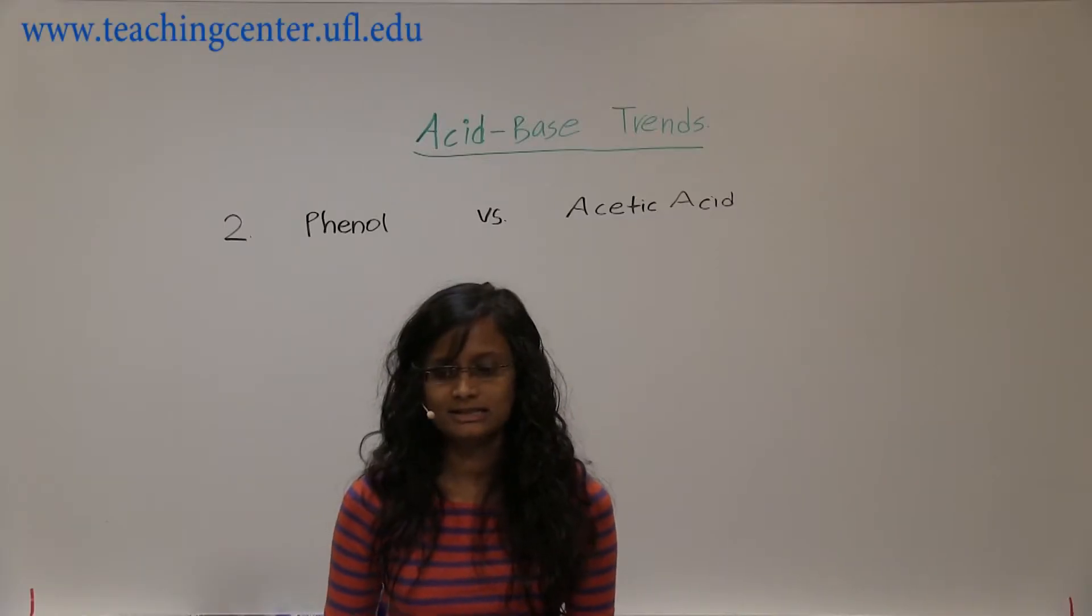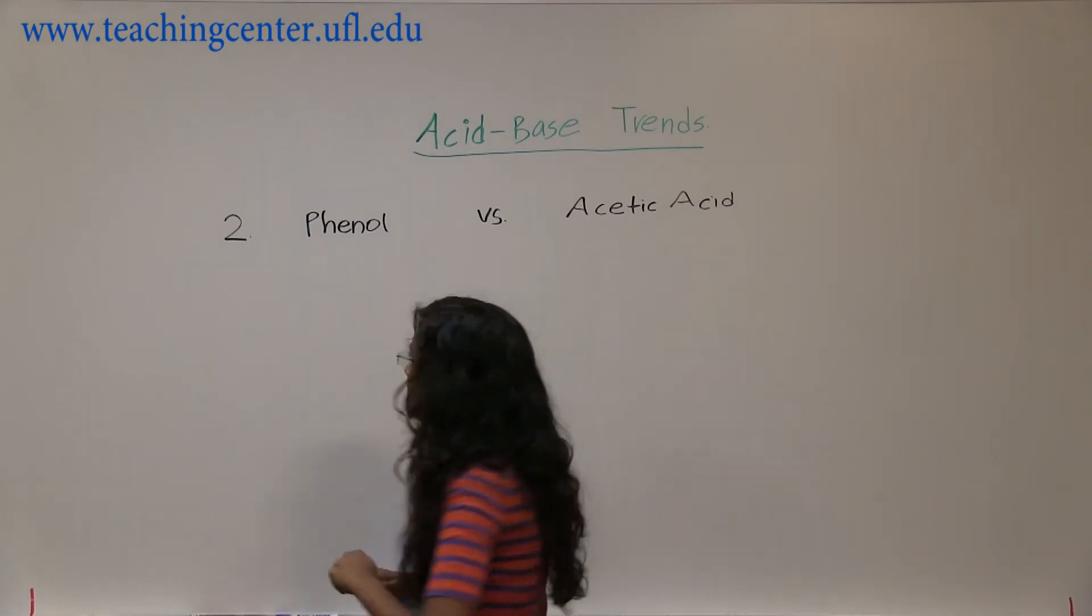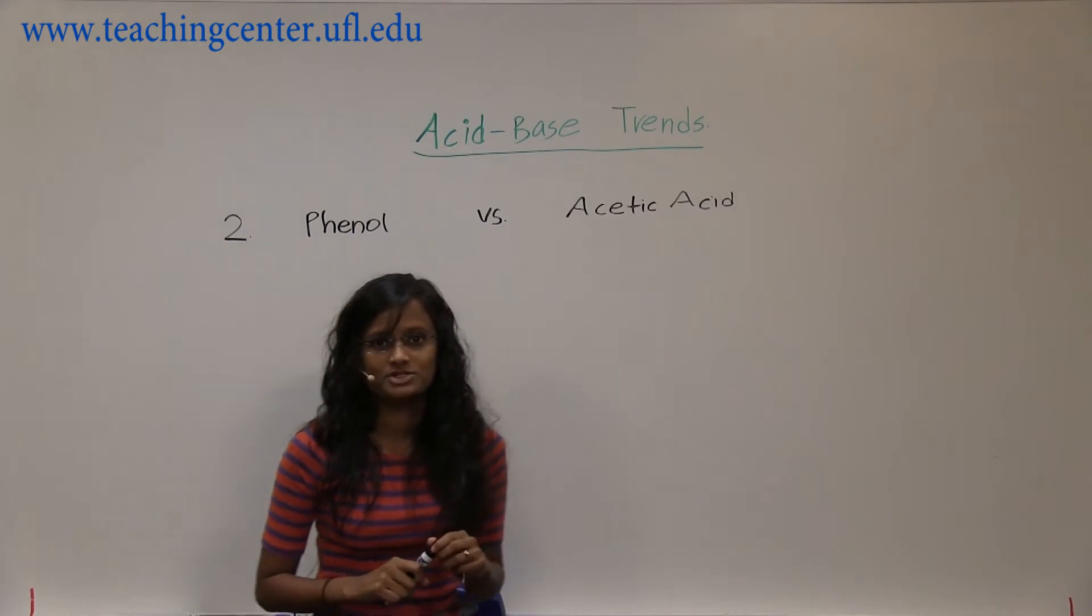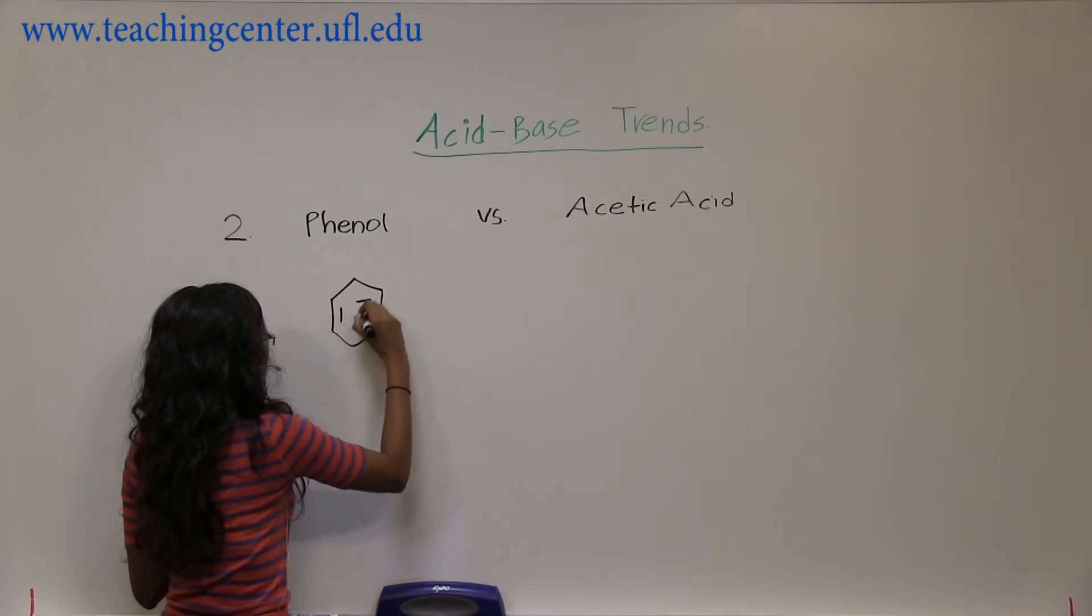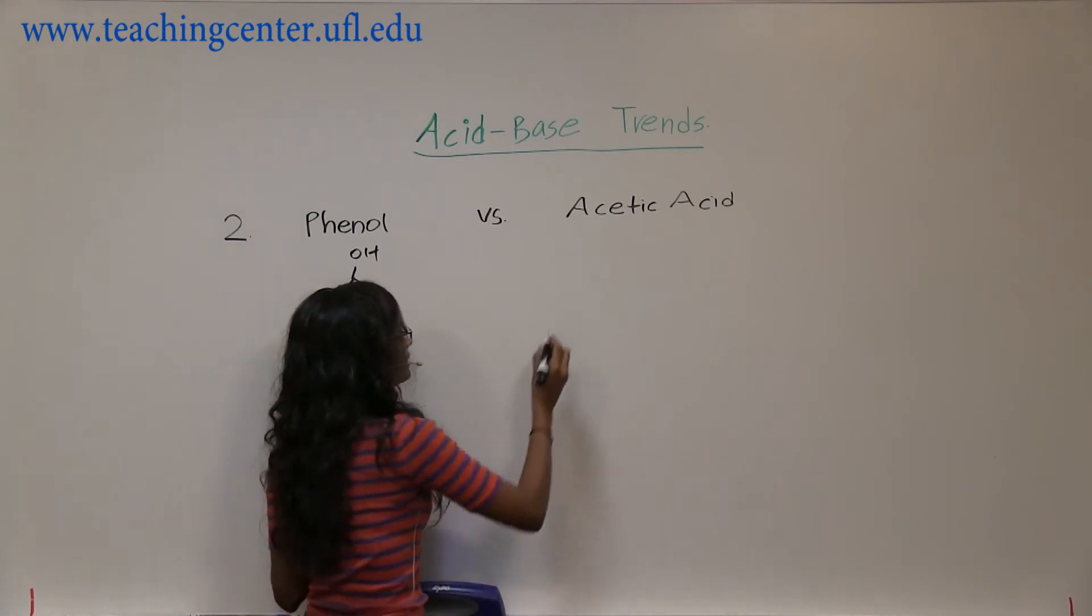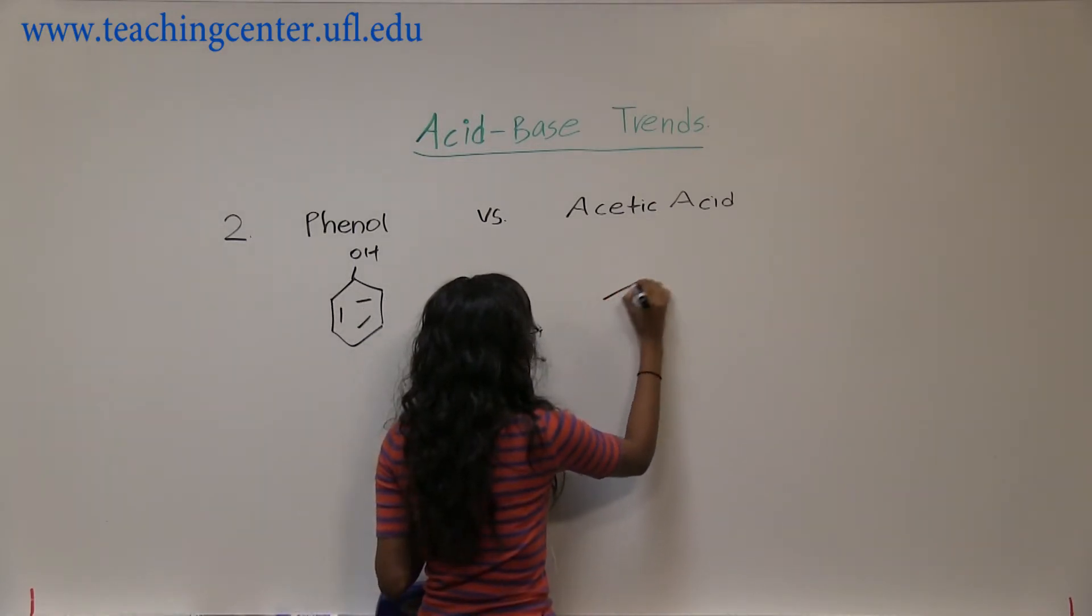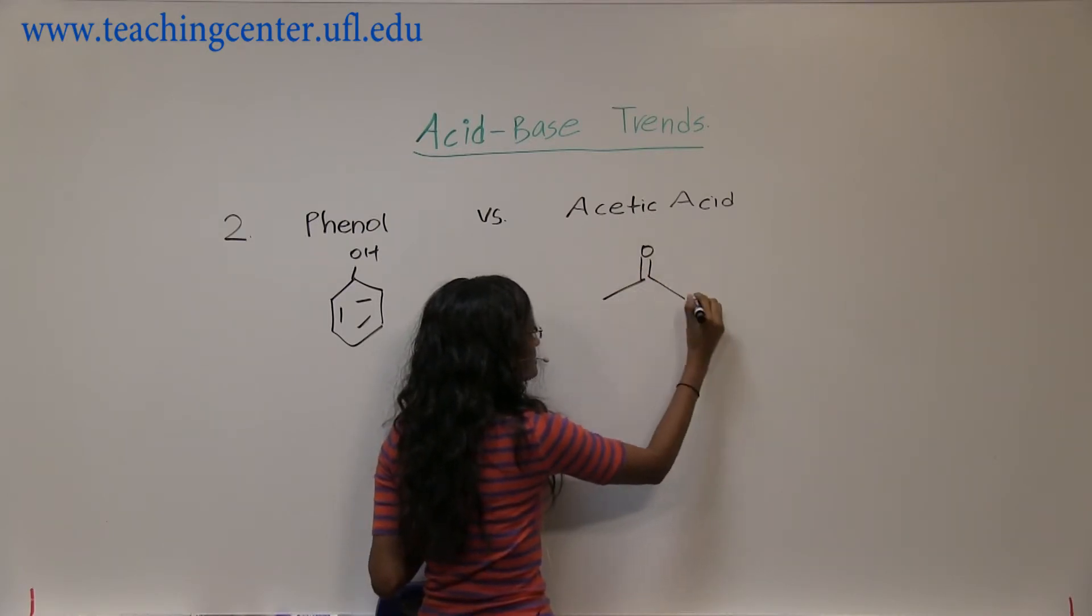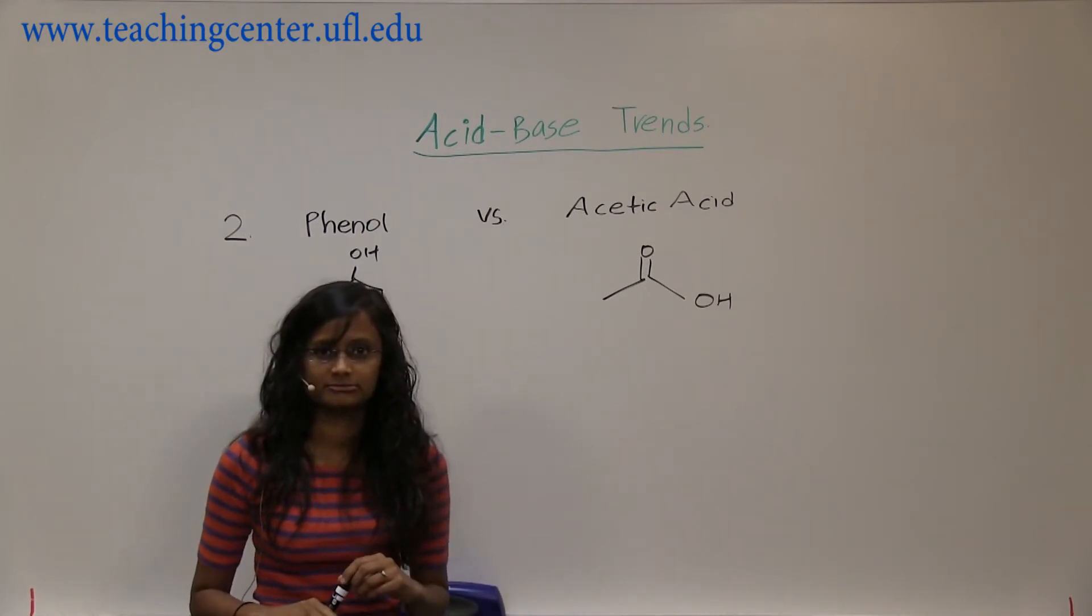Alright, the next example is phenol versus acetic acid. They're both acids, so let's draw them. First, phenol is the one that we just used earlier—benzene with the OH on it. And acetic acid is two carbons, and since it's a carboxylic acid, it's this one right here.